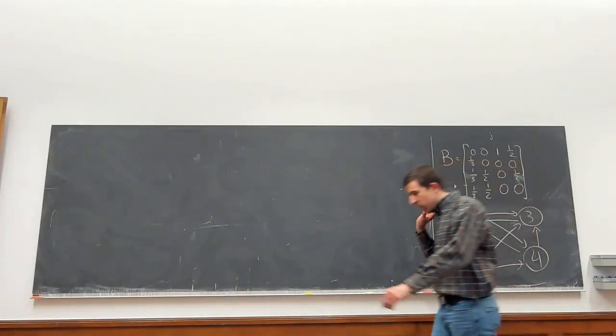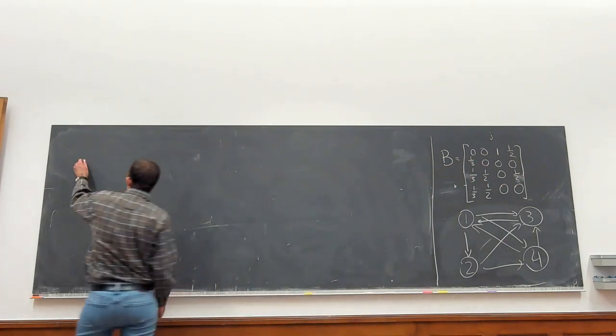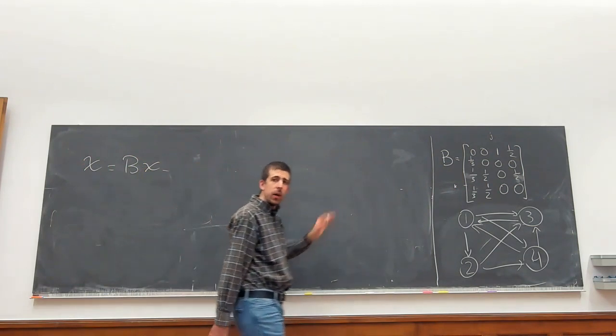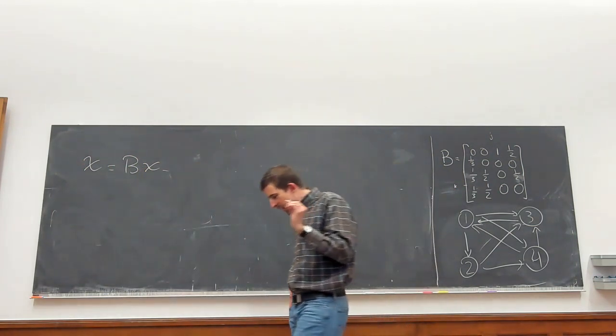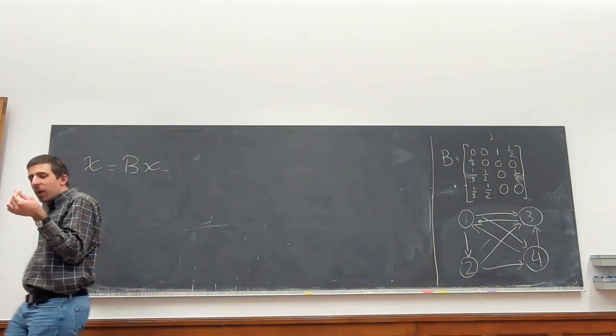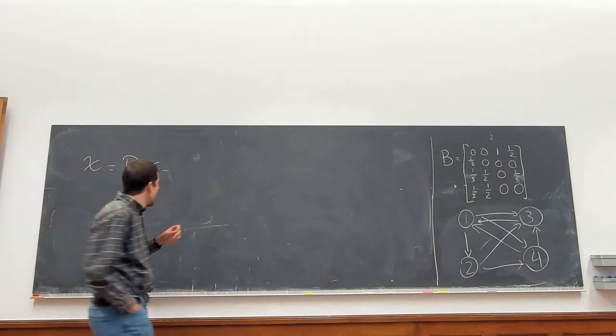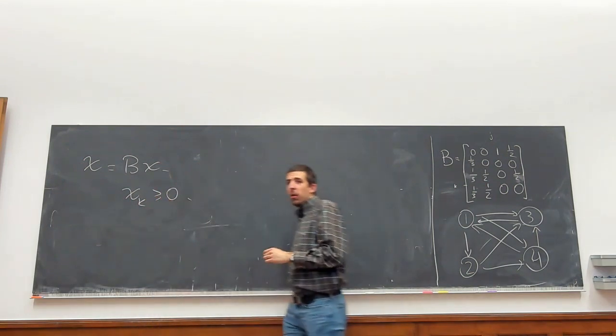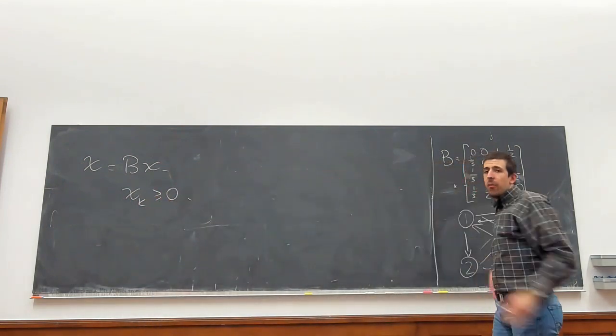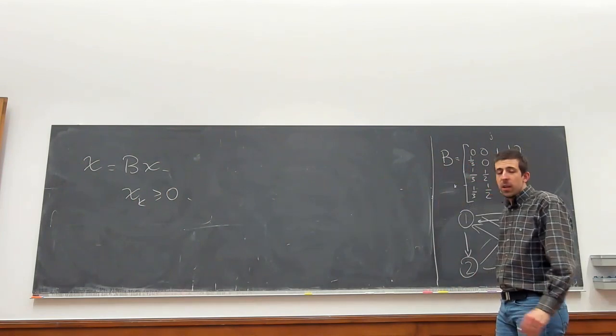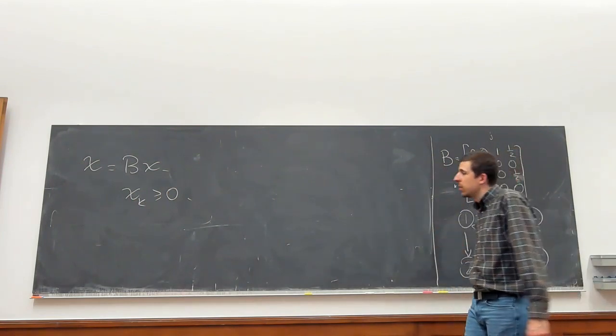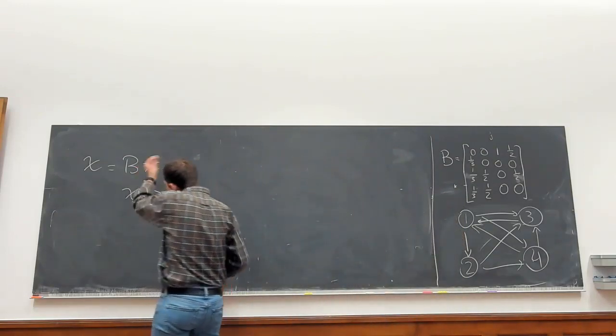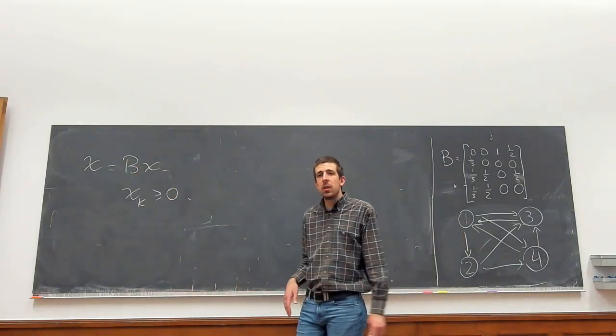We saw that there is an eigenvalue of an eigenvector of 1. The PageRank equation x=Bx has a solution which will be the solution of the scores. Now one thing that seems like I was trying to trick you: when you define that x_k needed to be bigger than 0, the fact that 1 is an eigenvalue of B does not tell me that the eigenvector needs to have positive entries.